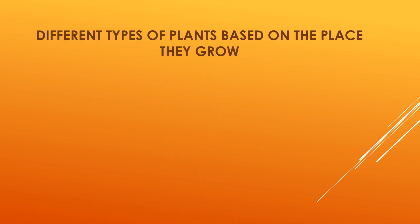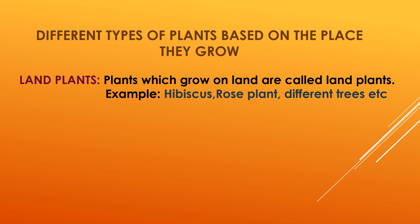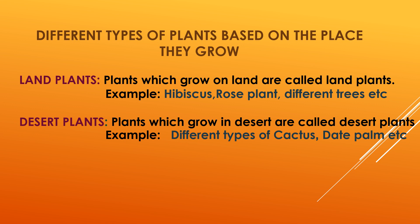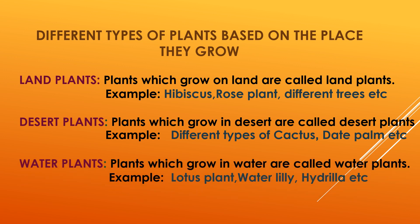Now we will recapitulate what we learned. There are different types of plants based on the place they grow. First, land plants: plants which grow on land are called land plants — example: hibiscus, rose plant, different trees, etc. Second, desert plants: plants which grow in desert are called desert plants — example: different types of cactus, date palm, etc. Third, water plants: plants which grow in water are called water plants — example: lotus plant, water lily, hydrilla, etc.